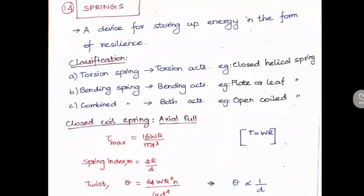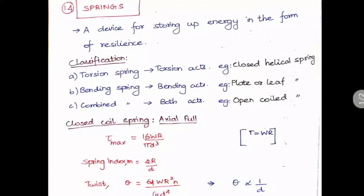A spring is a device for storing up energy in the form of resilience — it is just an energy storage element. There are three types of springs: one is the torsion spring where only torsion acts, an example being the closed helical spring; the bending spring where only bending acts, an example being the plate or leaf spring; and the third is the combined spring where both torsion and bending act, an example being the open coiled helical spring.